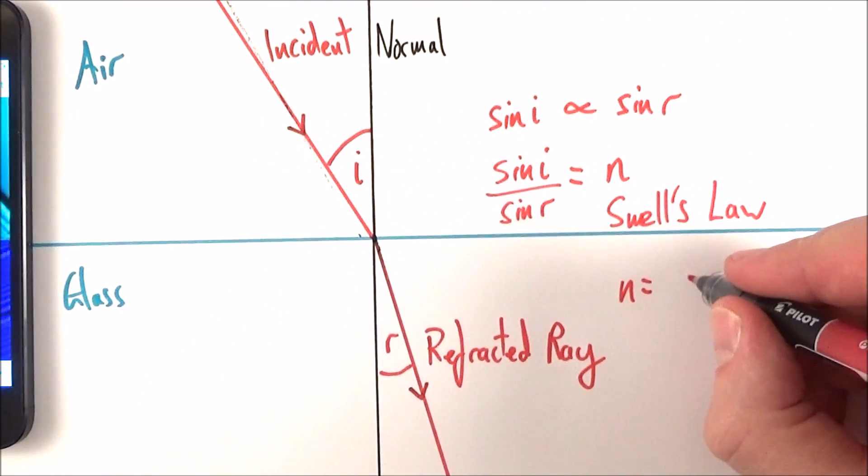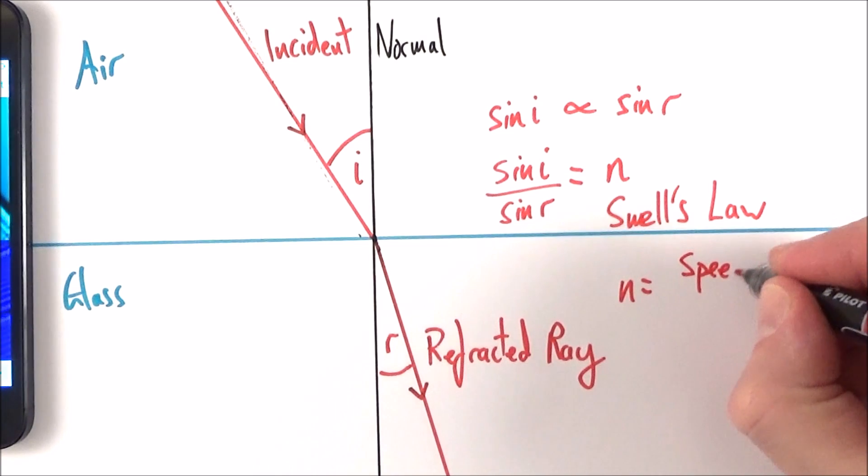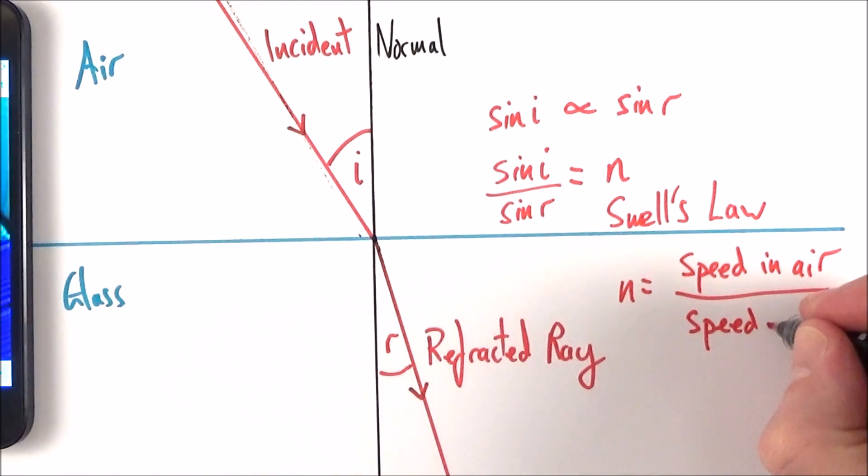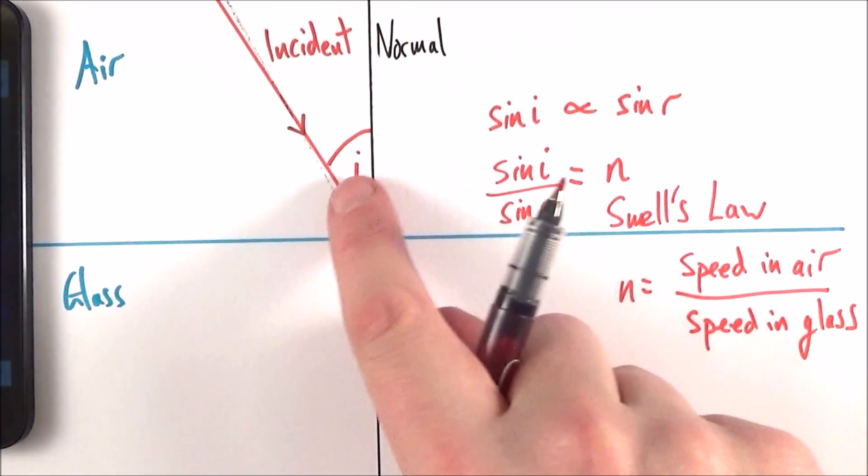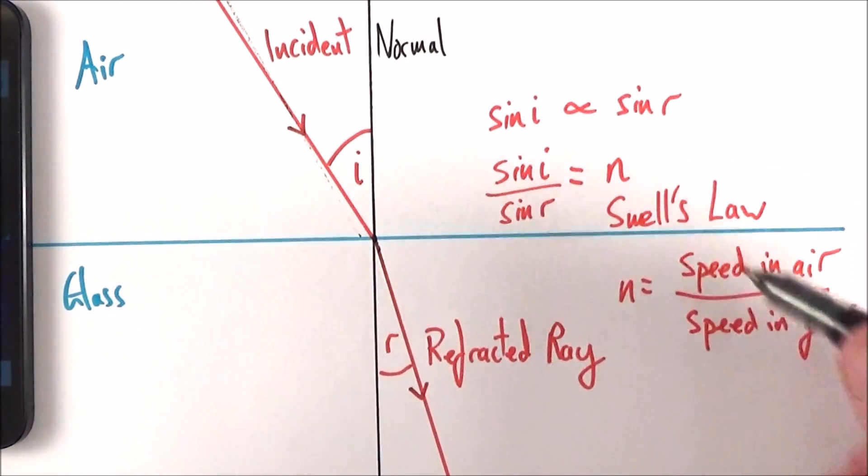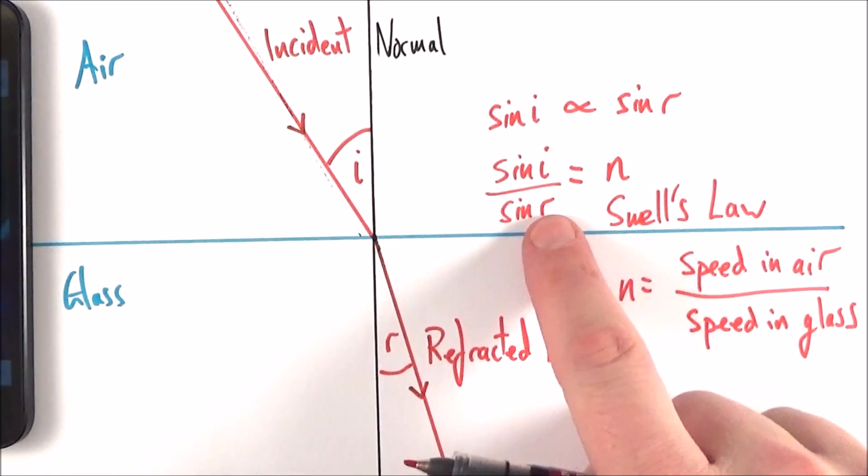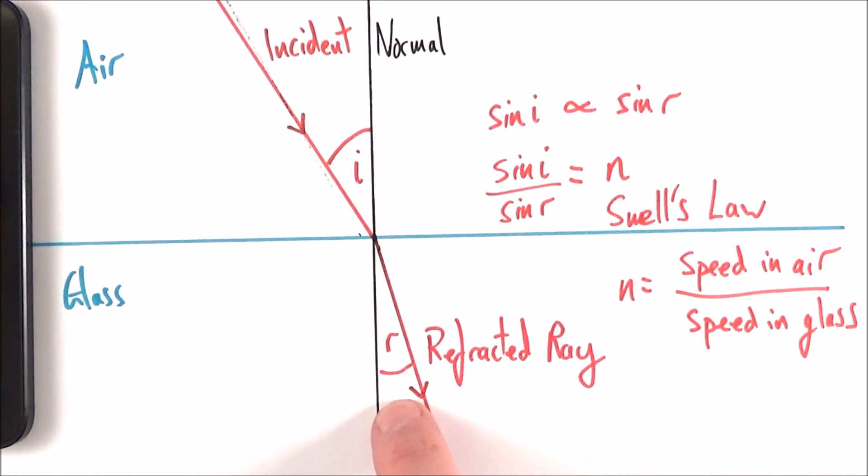So n is also equal to the speed, in this case in air, divided by the speed of that wave in the glass. And this is really only a case for where we have that interface here. And you'll see that if we go from glass to air, the value is going to be equal to one over n. So Snell's law is something that you need to know about in terms of refraction. And we're going to look at this in a bit more detail now when we look at something called total internal reflection.